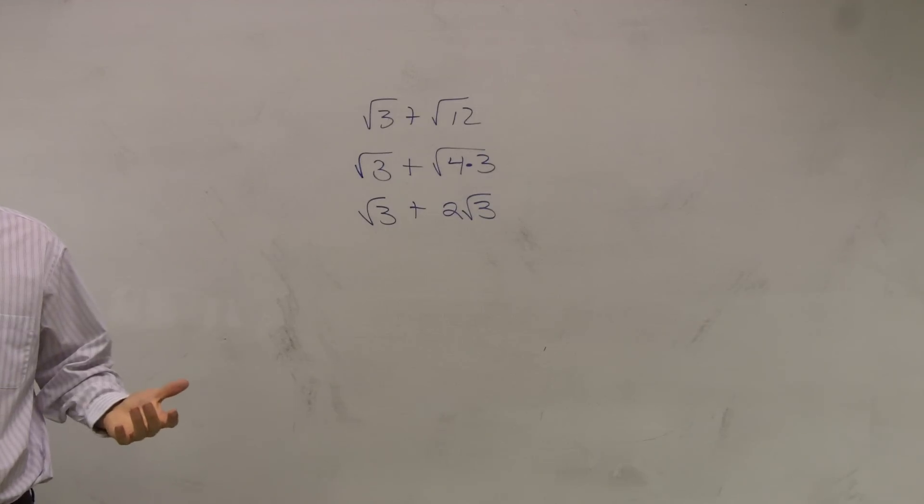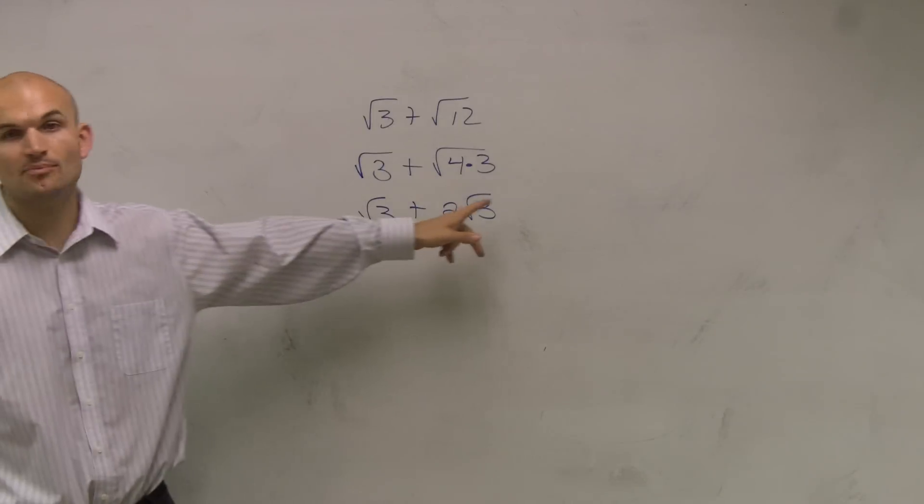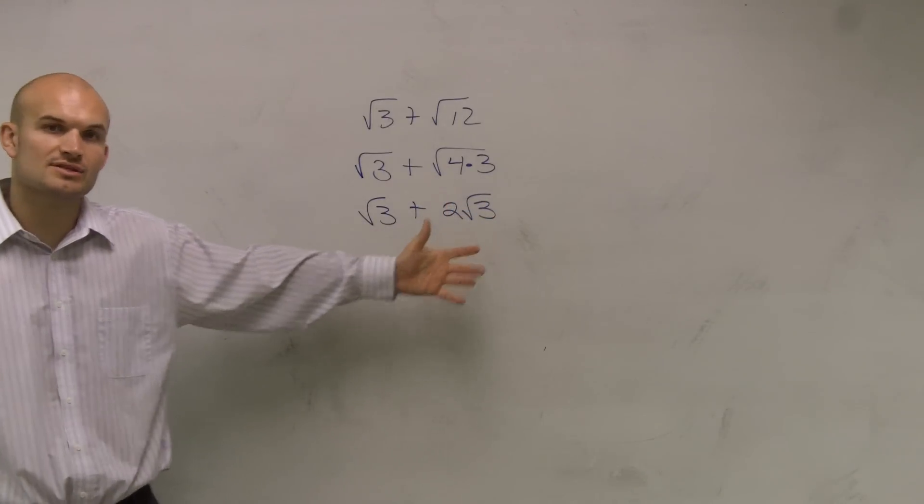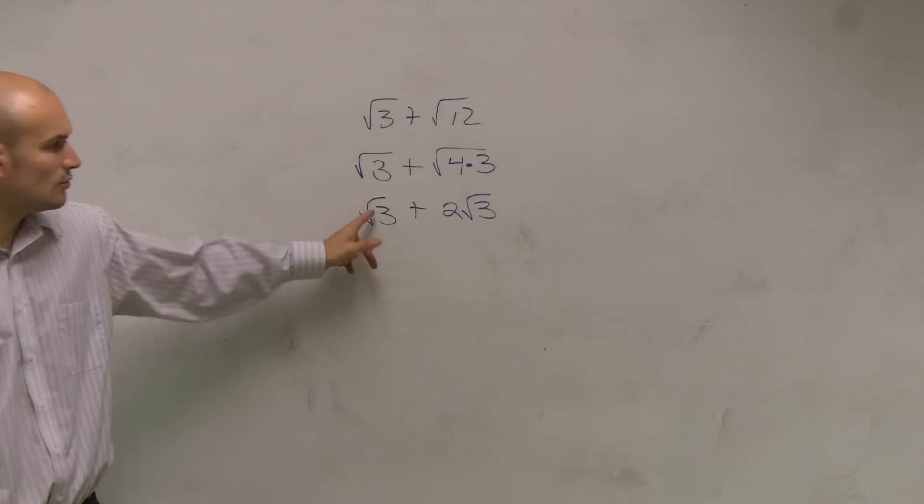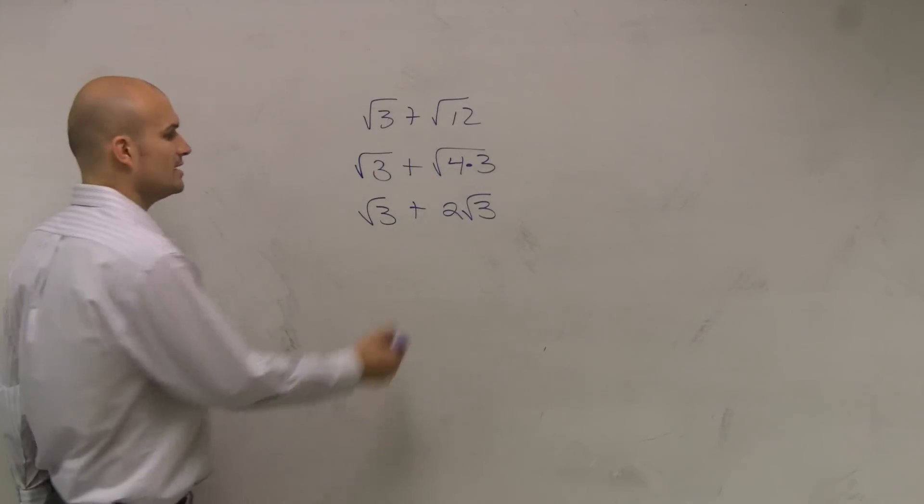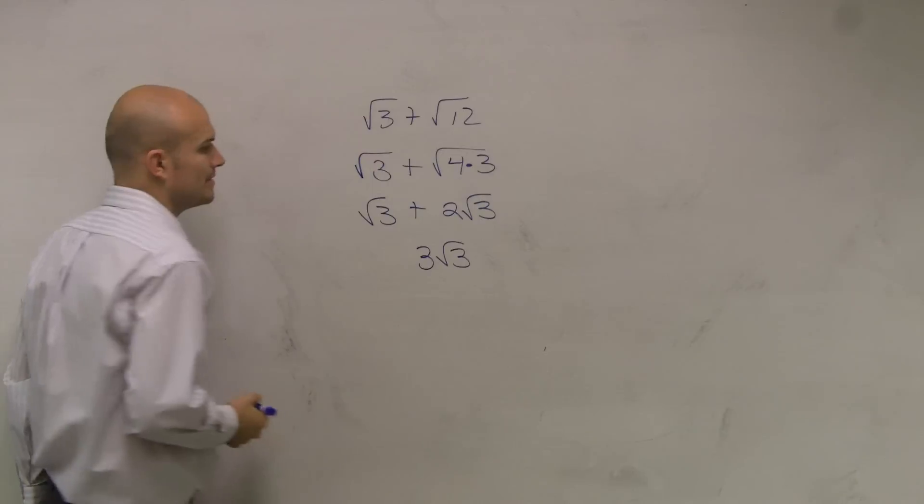Now what I have is what we call like terms. Since these are both the same term, we can treat them just like x's. We can just say x plus 2x would be 3x. Well, square root of 3 plus 2 square root of 3 is going to be 3 square root of 3.